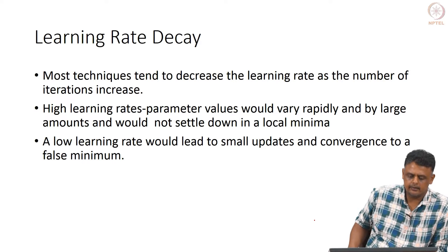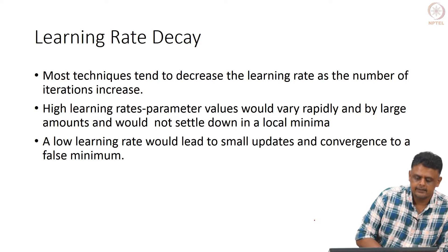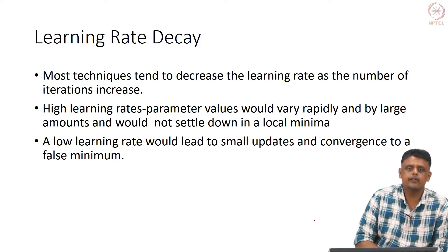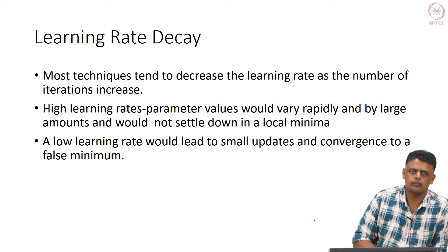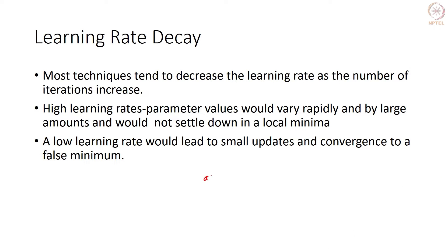The other important topic we would like to look at before weight initialization is learning rate decay. Because the neural network is a very complicated function of the weights, it is very difficult to say when we are near optimal minima. There must be some systematic way of changing your learning rate alpha — the one in W = W minus alpha × (∂L/∂W).